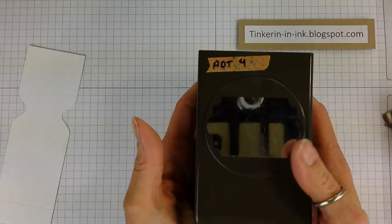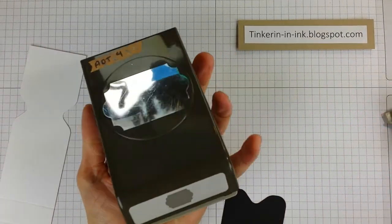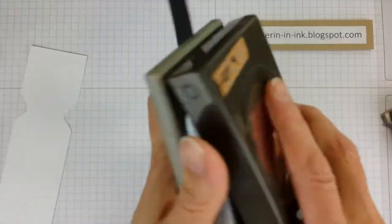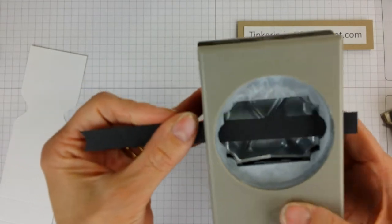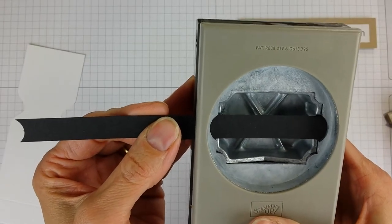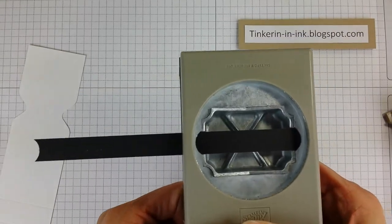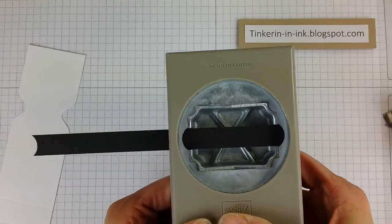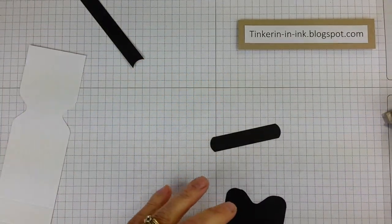So then we're going to use this classic label punch to get our rounded edges. We're going to take our half inch long strip and carefully line that up in the punch, just going to close it enough to hold it so I can look at it and make sure I've got that lined up where I want it. Looks pretty good. Pop. Yeah, I'm happy with that.